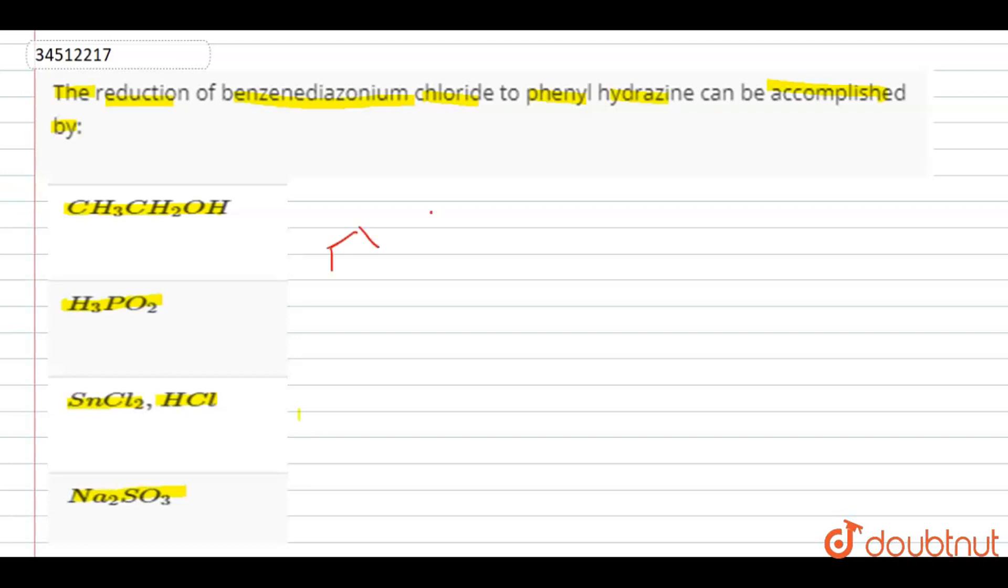When aniline is reacted with NaNO2 in presence of HCl, benzenediazonium chloride is formed. So our benzenediazonium chloride salt is formed, but now as it is reacted with SnCl2 and HCl...